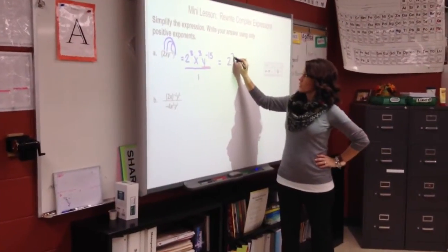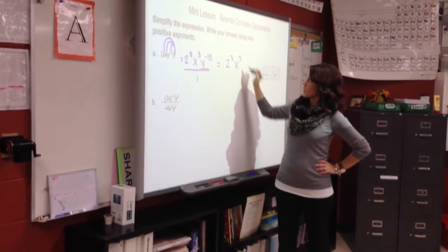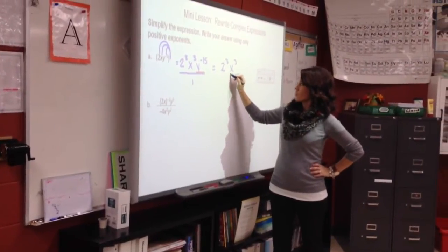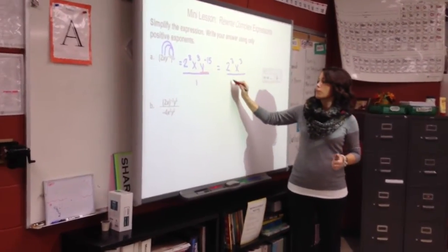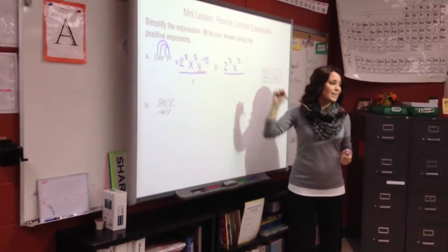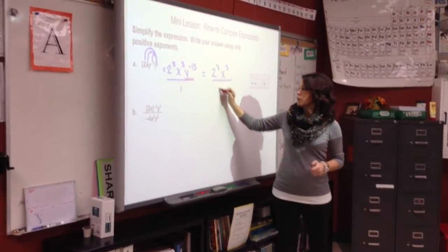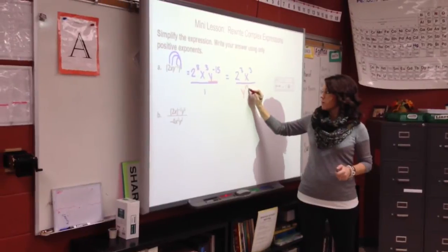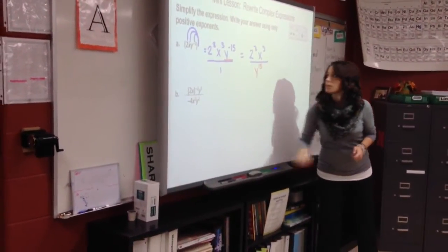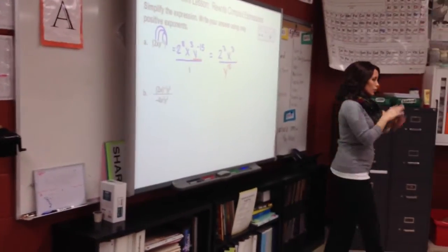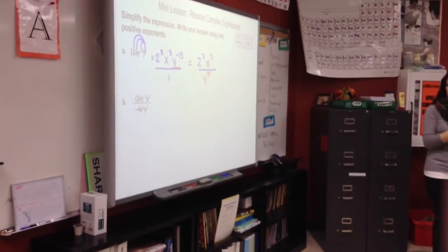Negative — so it stays. x to the third is not negative, so it stays. The y to the negative fifteenth is negative, so to rewrite it as a positive exponent, it moves to the denominator and becomes a positive exponent. Everything else stays put — it wasn't negative, so everything else stays put.